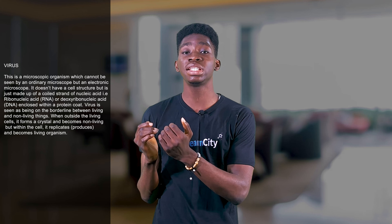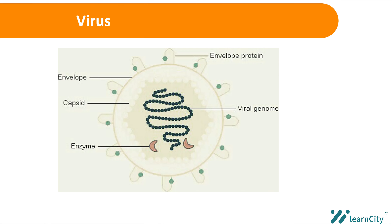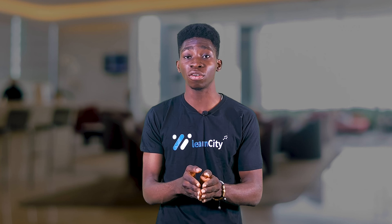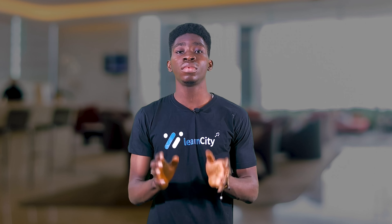A virus can be seen as the borderline between living things and non-living things, because it is not necessarily a living thing and also not necessarily a non-living thing. When a virus is outside living cells, in a non-living condition, it forms a crystal and becomes a non-living thing. But when a virus is inside a living organism or living cell, it replicates and produces, thus becoming a living organism. Because of this, the virus is called an obligate intracellular parasite — inside a living cell it is a living organism, while outside a living condition it is a non-living thing.